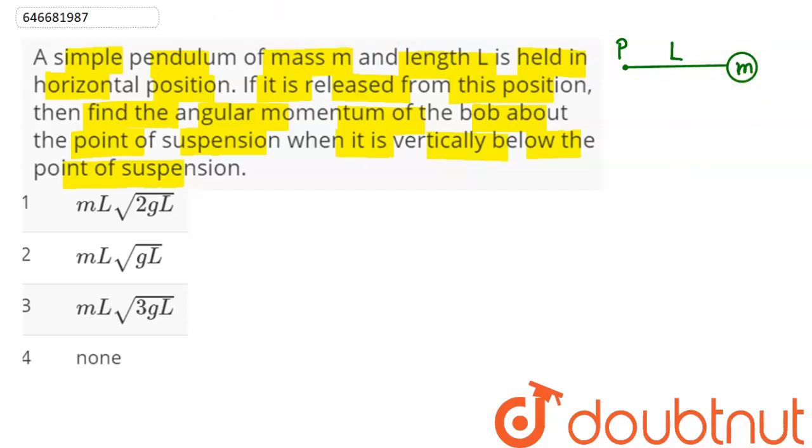Now when this mass is released here, so this mass comes here in vertically below direction at this point. So we need to find angular momentum of this particle about this point P here.